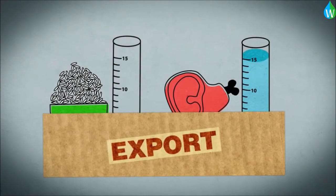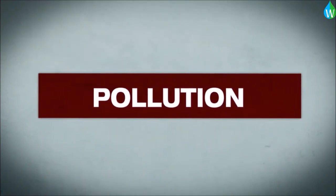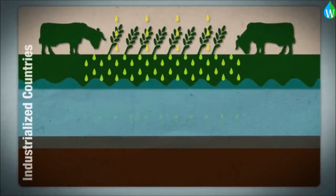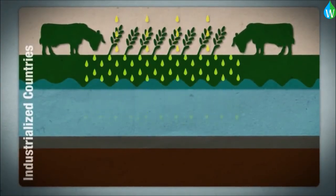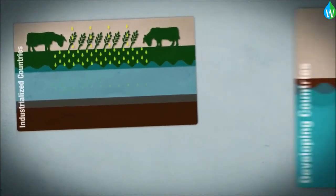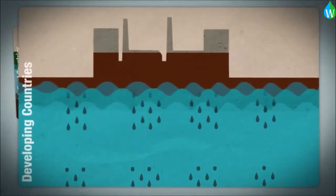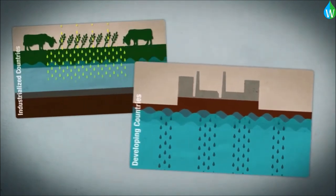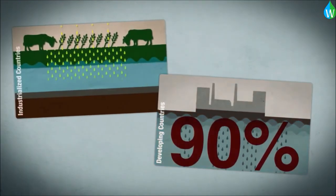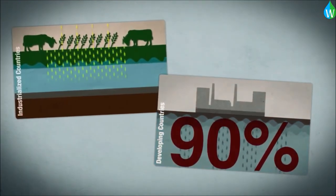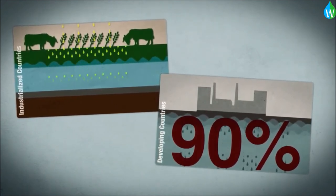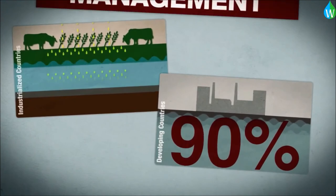Second, water pollution. In industrialized countries, the main problem is agriculture: groundwater quality can be reduced by inputting large quantities of pesticides and chemical fertilizers. In developing and emerging countries, the absence of any wastewater management is usually critical. In developing countries, 90% of urban wastewater pours untreated into rivers, lakes, or the sea.